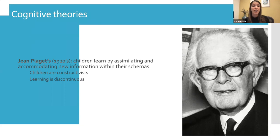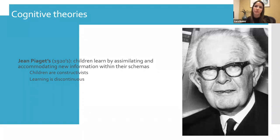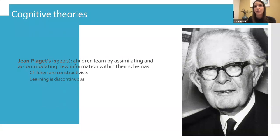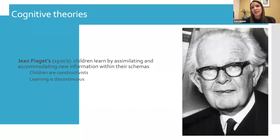Piaget proposed that children aren't at the mercy of their environment — they're not just passive, waiting for someone to shape their behavior. They're active, trying to understand and learn about themselves and the world. He also proposed that learning is discontinuous, meaning a child at four years of age thinks completely differently than a child at seven years of age. This fits the theme of child development around whether something is continuous versus discontinuous — qualitatively different stages versus just getting quantitatively better at something.